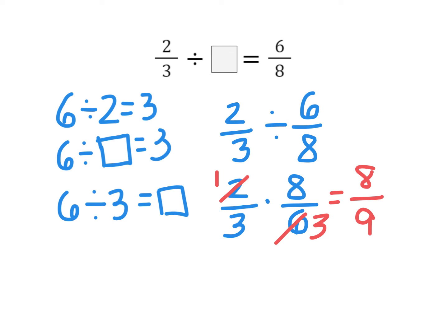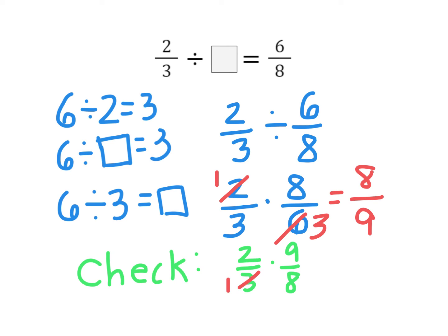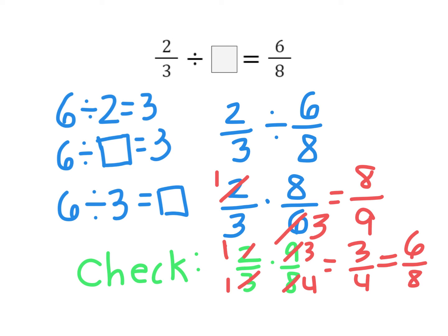Let's go back and do our check to make sure. If we have 2 thirds divided by 8 ninths, which is going to be times 9 eighths — simplifying, this is 1 and 3, and this is 1 and 4 — I end up with 3 fourths. Of course, if I double both the numerator and the denominator, that's the same as 6 eighths. So I know that I'm correct.